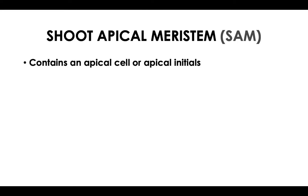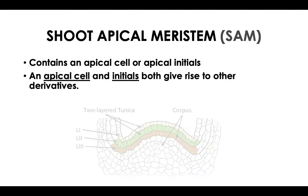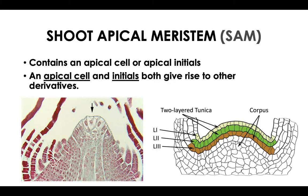Regarding the SAM and RAM and their specific function in the plant body: the SAM contains the apical initials or apical cells, which continuously divide to give rise to other cells. The tunica-corpus model, characterized by three layers of meristematic cells, is common for angiosperms, while for lower vascular plants a single cell initial is common.